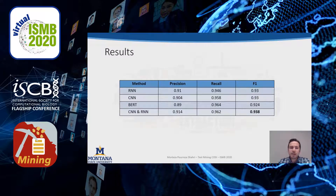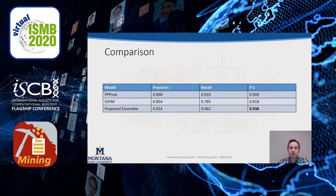Comparing our ensemble model with recurrent neural network, convolutional neural network, and BERT, our ensemble model provides the best F1 value. Additionally, our proposed ensemble model significantly outperforms the supervised model PP-PREP and the semi-supervised model S3VM based on support vector machines.